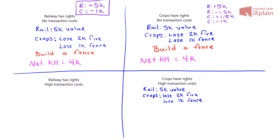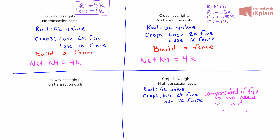We have to think about the trade-off for the crop owner. Is the crop owner going to build its own fence? Building a fence is cheaper, but you have to realize that if there is a fire, since they have the property right, the rail owner would compensate the $2,000 loss. So there's really no loss to the crop owner at all if there is a fire, but there is a loss of $1,000 if they build a fence. From the crop owner's perspective, they can choose to build a fence at $1,000 or have no loss whatsoever and let the rail owner face the costs. So they're not going to build a fence themselves.